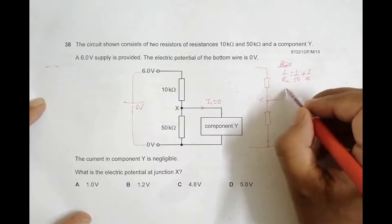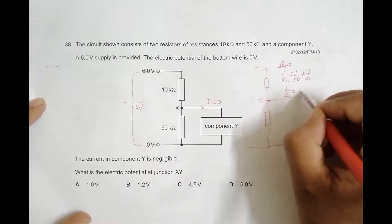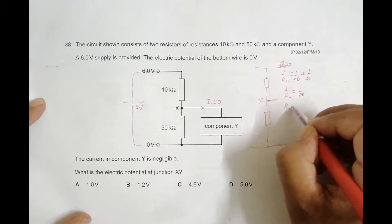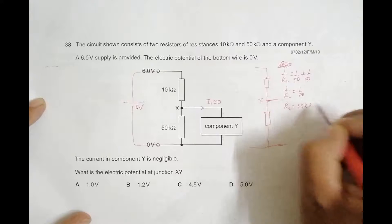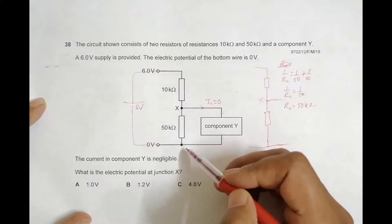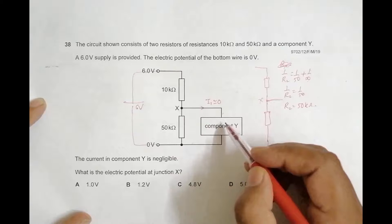1/infinity is 0, so 1/R2 is equal to 1/50. That means R2 is equal to 50 kilo-ohms. So this whole resistance is 50 kilo-ohms because this is infinite.